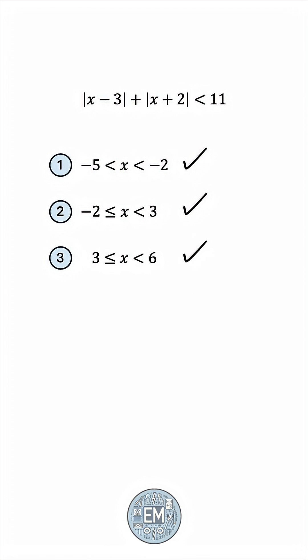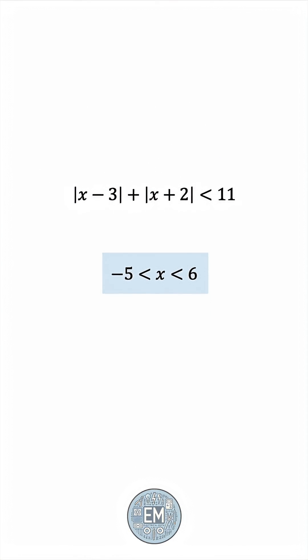So, with these three cases, let's now look at the union of all of them. Notice that the intervals are consecutive, so the union would be from negative 5 all the way to positive 6. And that's the final answer.